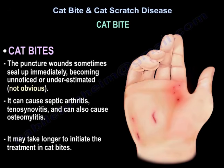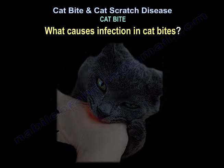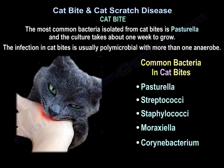Unnoticed puncture wounds can cause septic arthritis, tenosynovitis, and osteomyelitis. It may take longer to initiate treatment in cat bites. Risk factors for infection include delayed treatment for more than 12 hours, older age, puncture wounds, and comorbid conditions such as diabetes or immunosuppression. The most common bacteria isolated from cat bites is Pasteurella, and the culture takes about one week to grow.